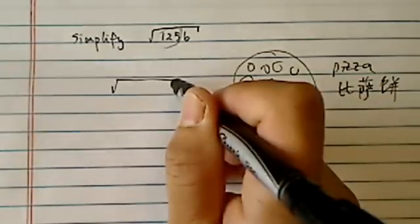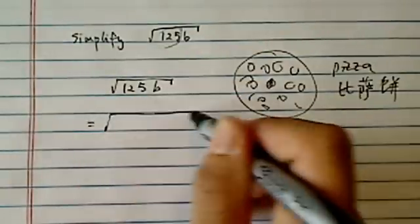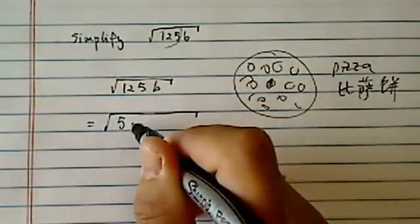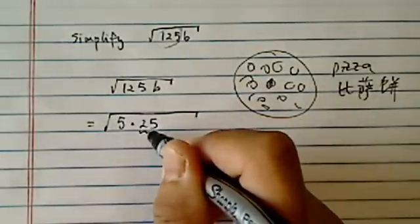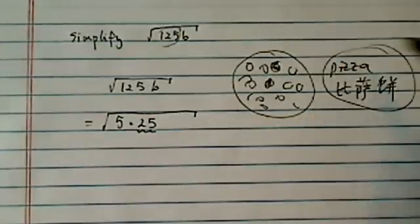And what do we like in simplifying radicals? We love perfect squares. Okay, so let's write this one out. I have 5 times 25. I love 25. That's kind of like the sausages on my pizza here. Remember the pizza.